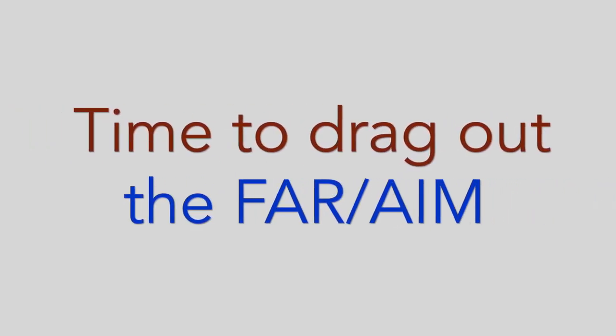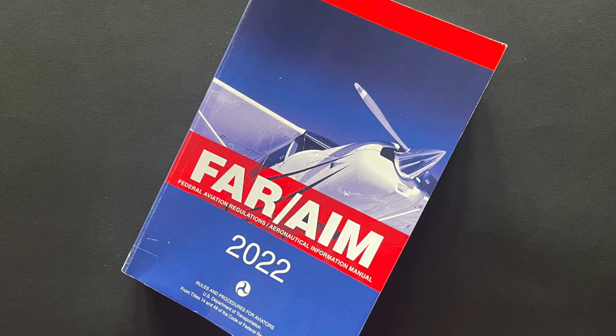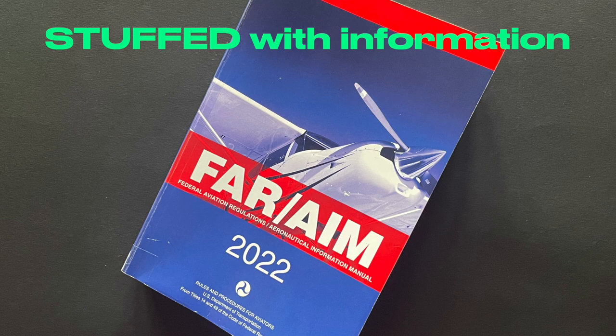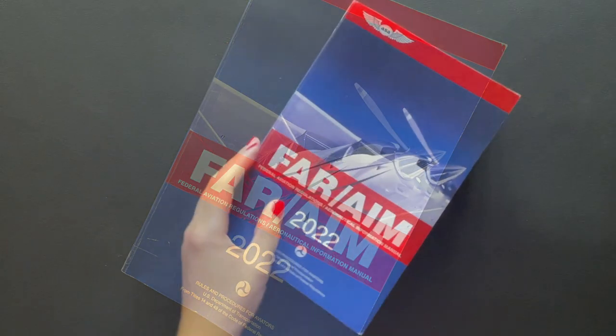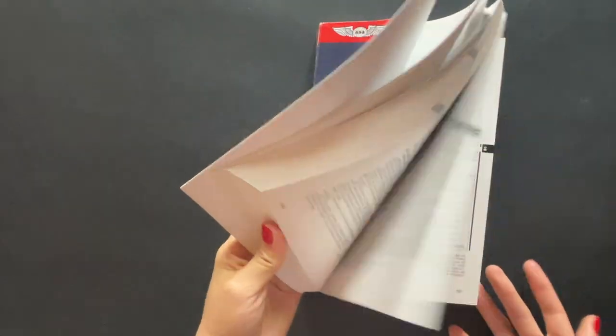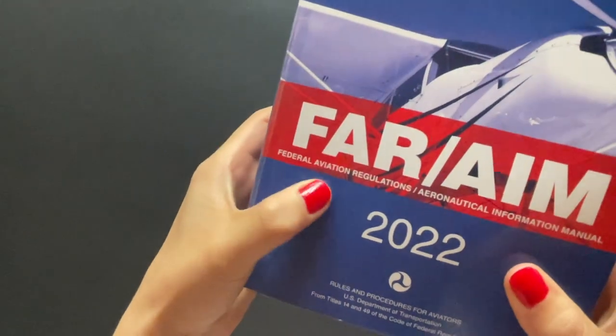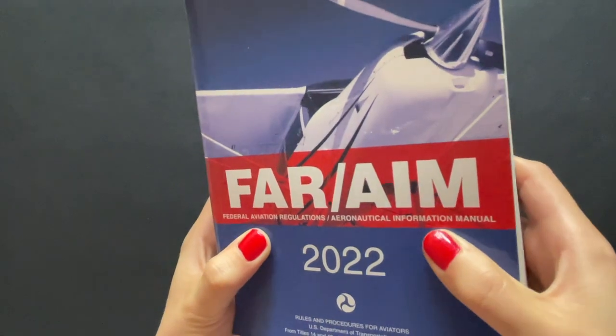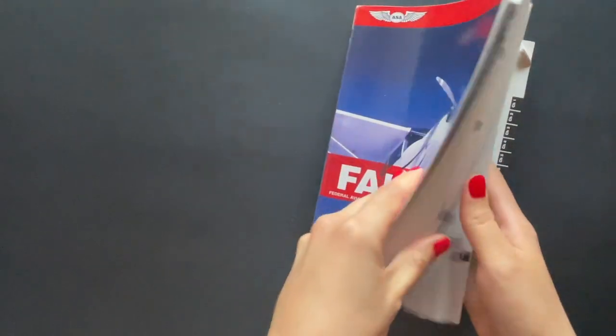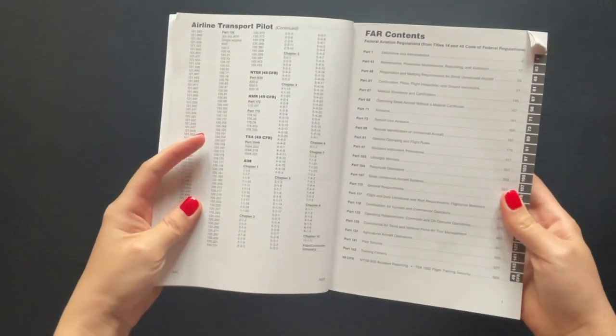Further important details are available in the FAR/AIM book. This book includes a section on federal aviation regulations (FARs) and the aeronautical information manual (AIM) — basically two books printed into one. Therefore it contains two sets of table of contents, one for the FARs and one for the AIM, which begins about halfway through.